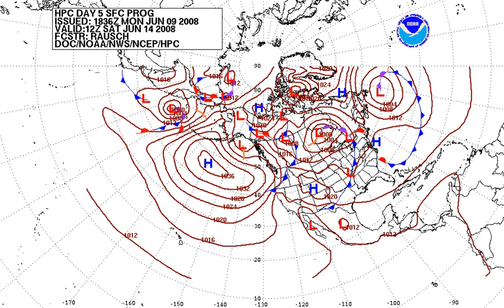Pressure on Earth varies with the altitude of the surface, so air pressure on mountains is usually lower than air pressure at sea level. Pressure varies smoothly from the Earth's surface to the top of the mesosphere. Although the pressure changes with the weather, NASA has averaged the conditions for all parts of the Earth year-round. Temperature and humidity also affect atmospheric pressure. At low altitudes above sea level, the pressure decreases by about 1.2 kPa for every 100 metres.